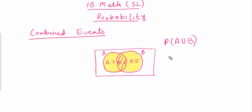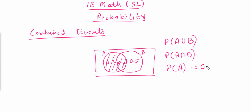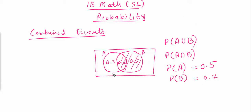If we want to represent only the common region between the two events, we write it as P(A ∩ B) — the probability of A intersection B. The formula relating these combined event probabilities is: P(A ∪ B) = P(A) + P(B) minus P(A ∩ B).